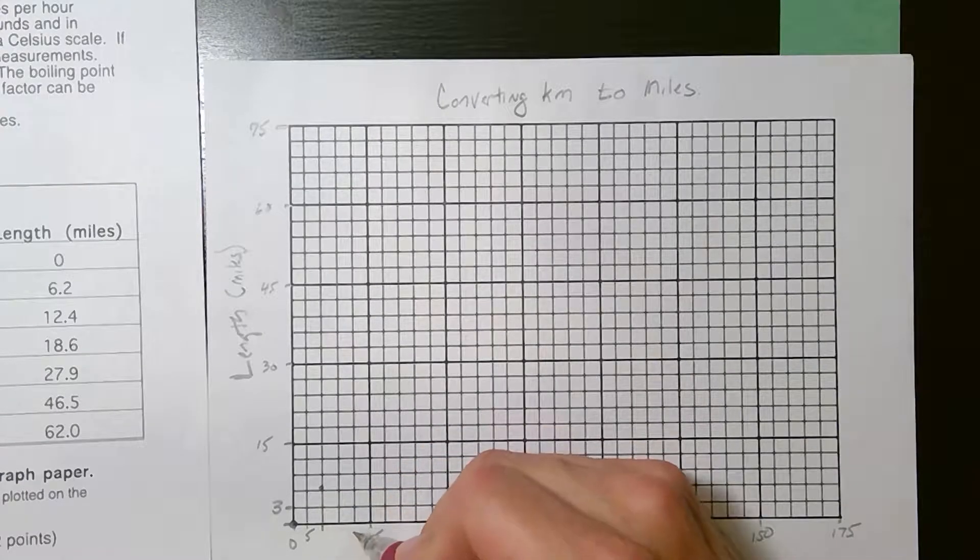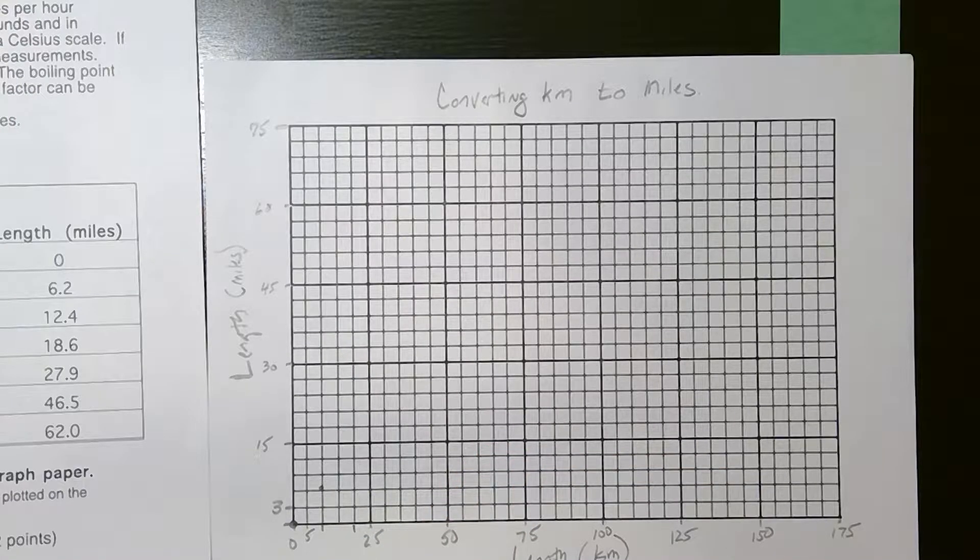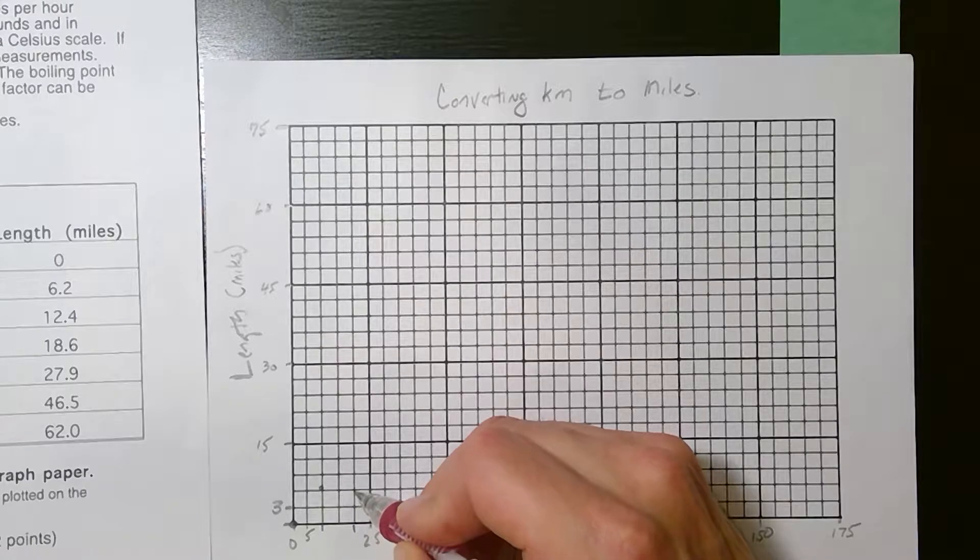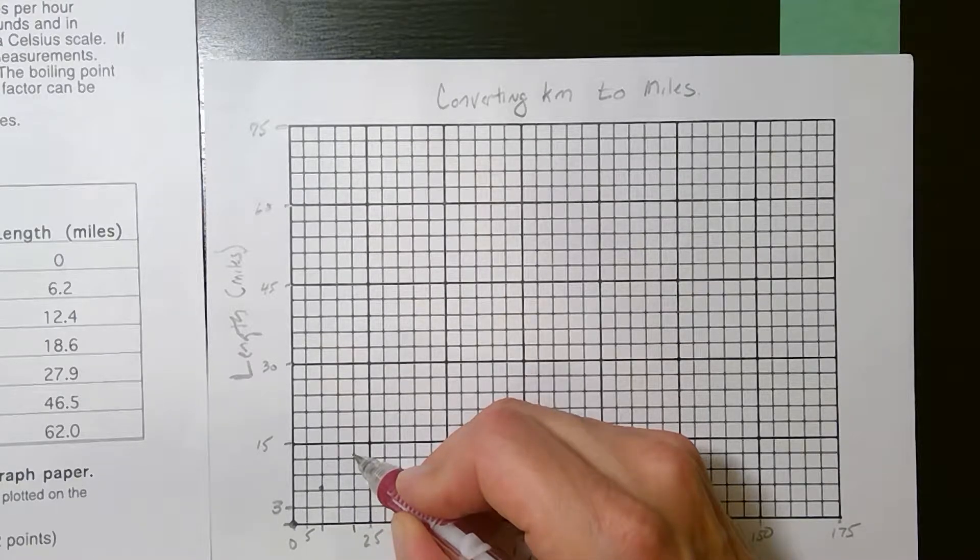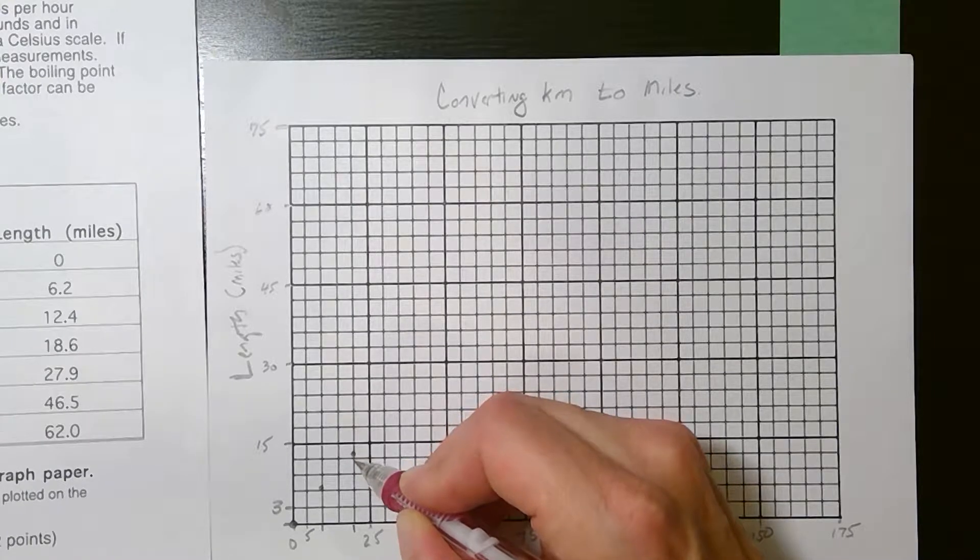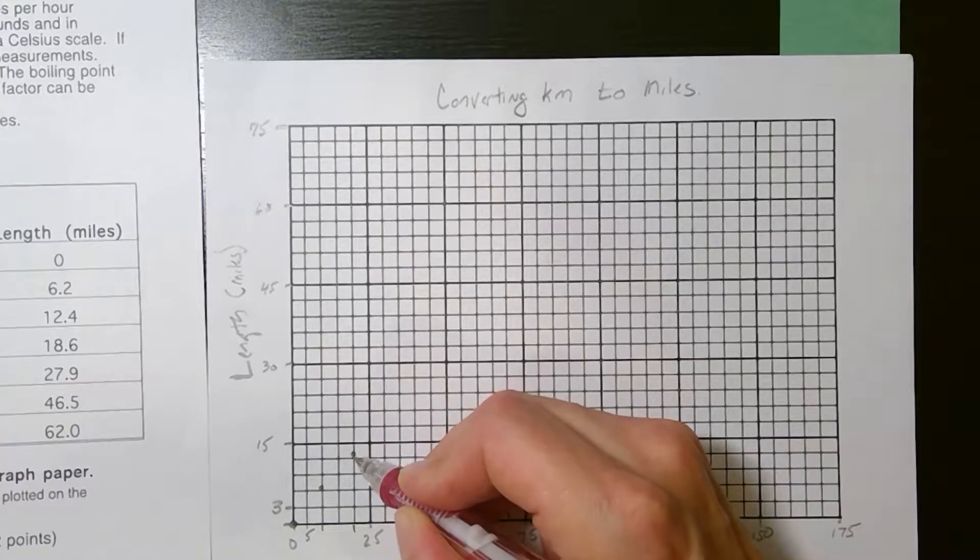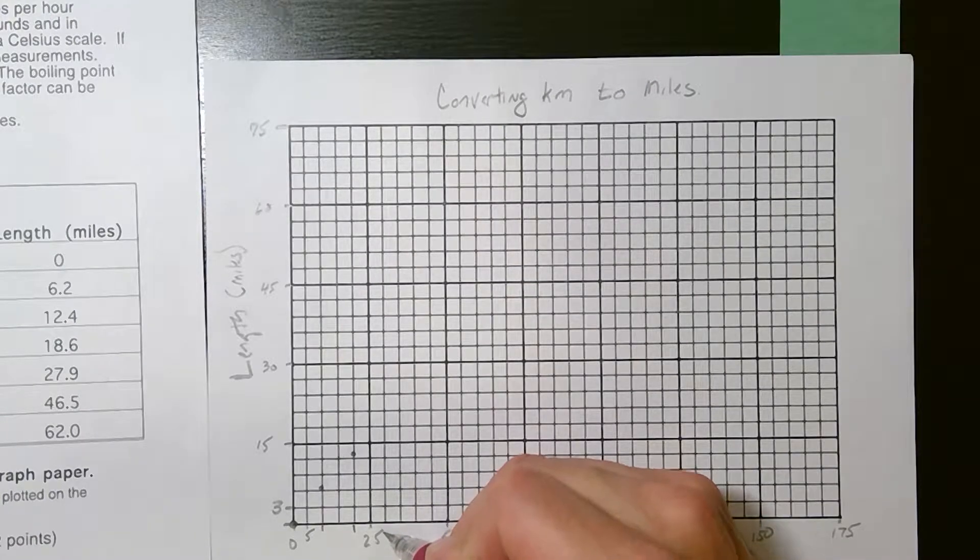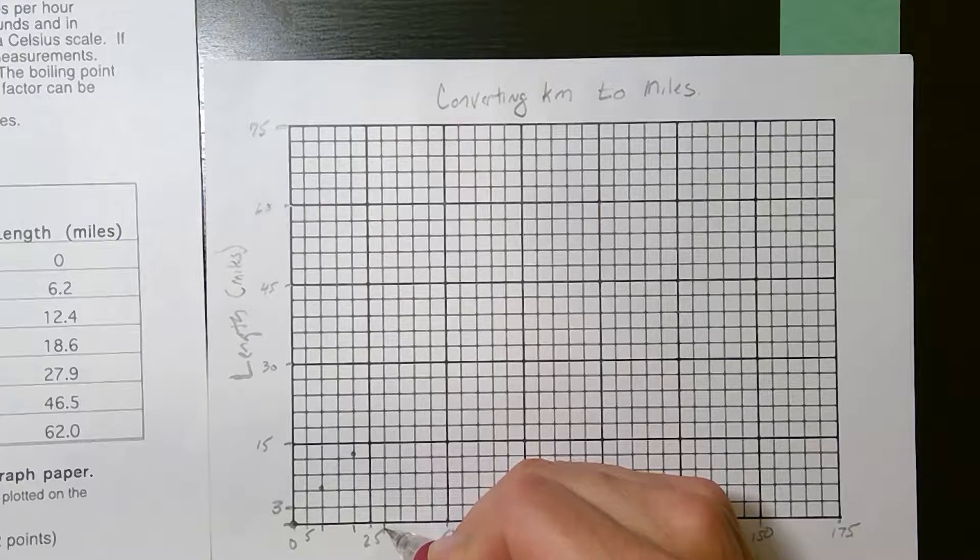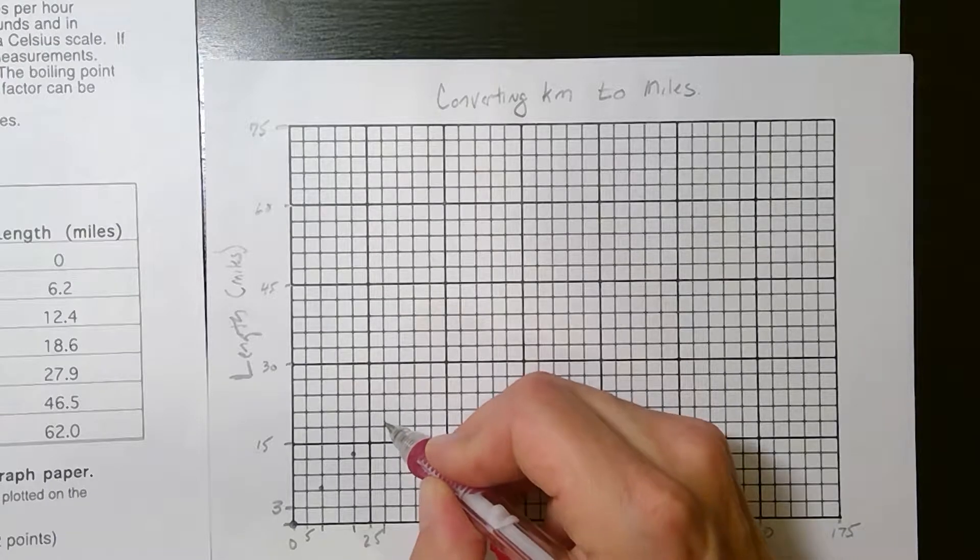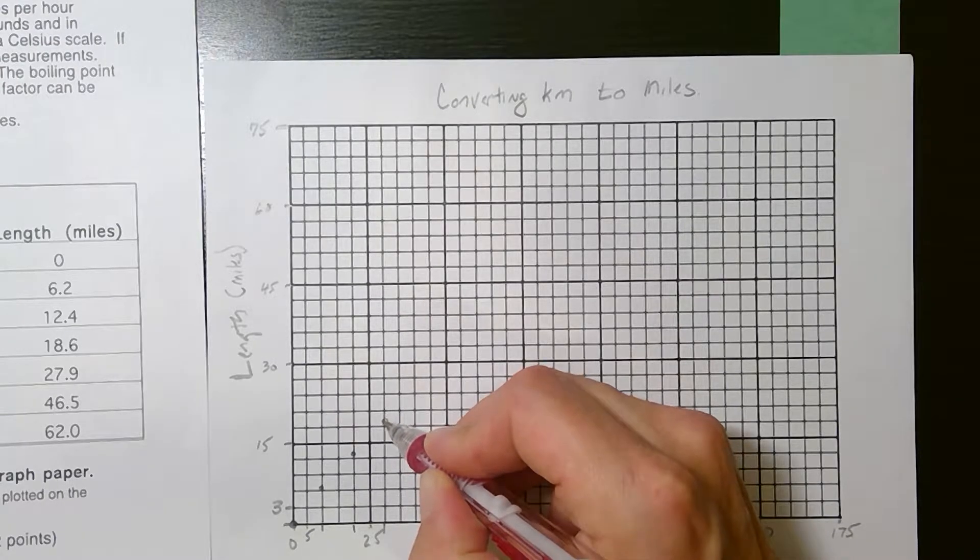20 would be here. And we have to go up to 12.4. 3, 6, 9, 12. 12.4 is going to be between 12 and 15, but it's definitely closer to 12. 30 is one line 5 after 25. And 30 is 18.6. 18 is here. So 18.6 should be there.